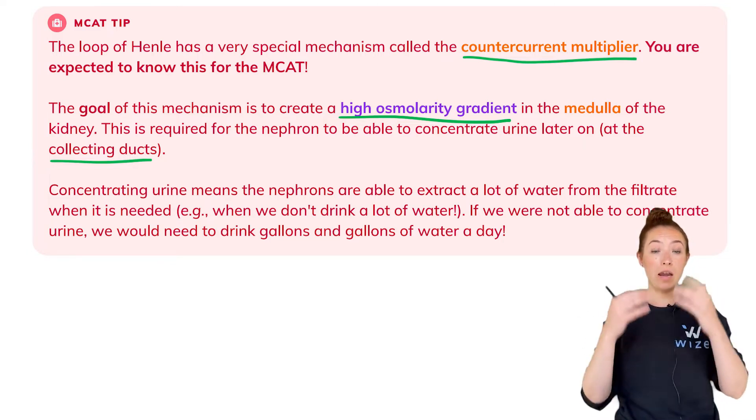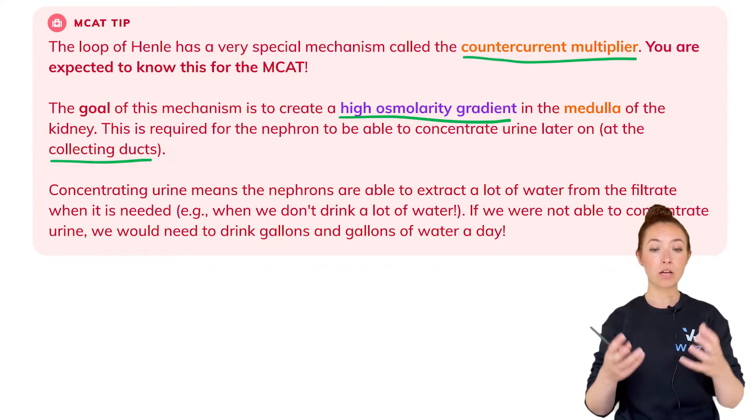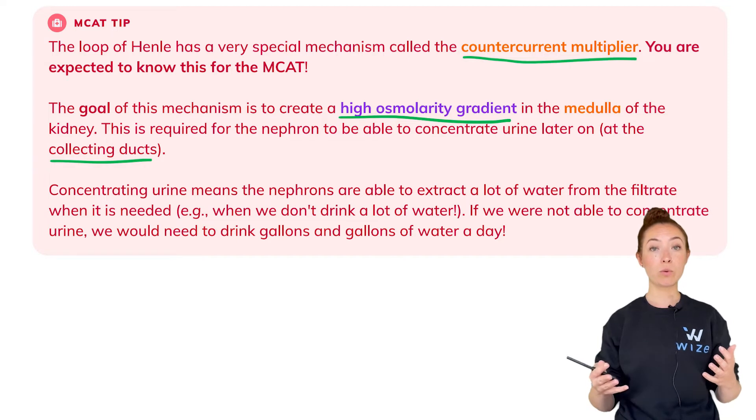For the medulla to actually have a very high osmolarity, it has a high osmolarity gradient to draw water. If water is going away by osmosis, then you need to have a concentration gradient. The counter current multiplier sets up this osmolarity gradient so that we can concentrate urine at the collecting ducts.